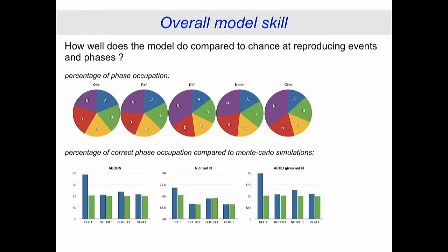Summarizing more clearly: for phase occupation scores across A-B-C-D-N, the reference run does pretty well compared to chance, but the notch and climatology runs really don't. For detecting an event regardless of phase, the reference run is slightly better than chance, the others are not. Given an event, how well do the phases line up? Quite well for the reference run; slightly better than chance for the others — likely because it's an internal mode, so once one phase is correct the rest tend to follow.